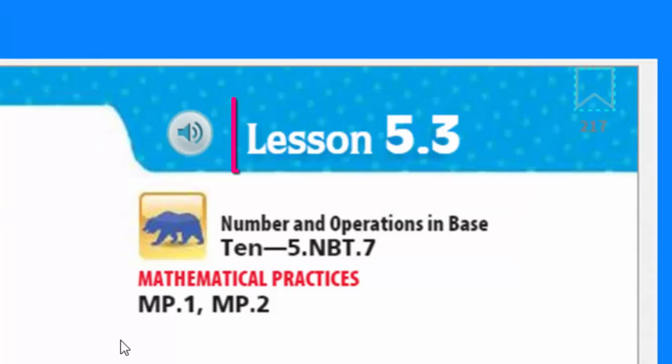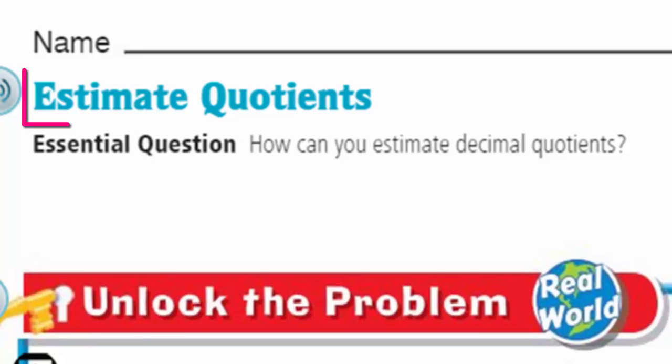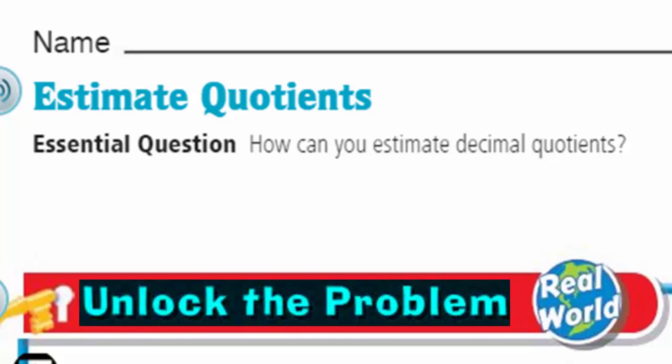Our lesson is 5.3 and we are looking at the topic of estimating quotients, so we're in the section of division my friends. We have an essential question: how can you estimate decimal quotients? But that makes obvious sense since the topic is estimate quotients. Now it is time to unlock the problem.